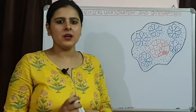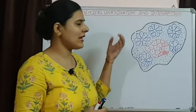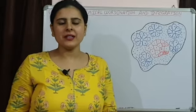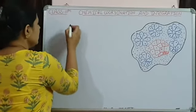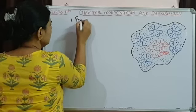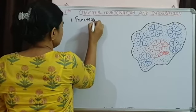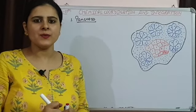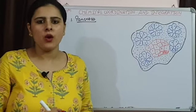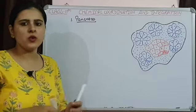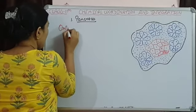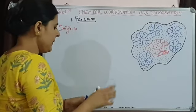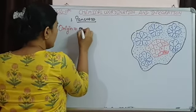Good morning students. Today we are going to discuss some more glands of our endocrine system. The first gland we are going to discuss is pancreas. If we talk about the origin of pancreas, it is basically endodermal in origin — it is going to originate from the endoderm of the embryo.